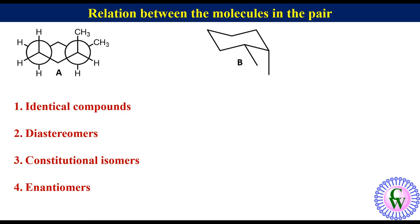Both A and B are 1,2-dimethyl cyclohexane. So, there is not any possibility for them to be constitutional isomers.